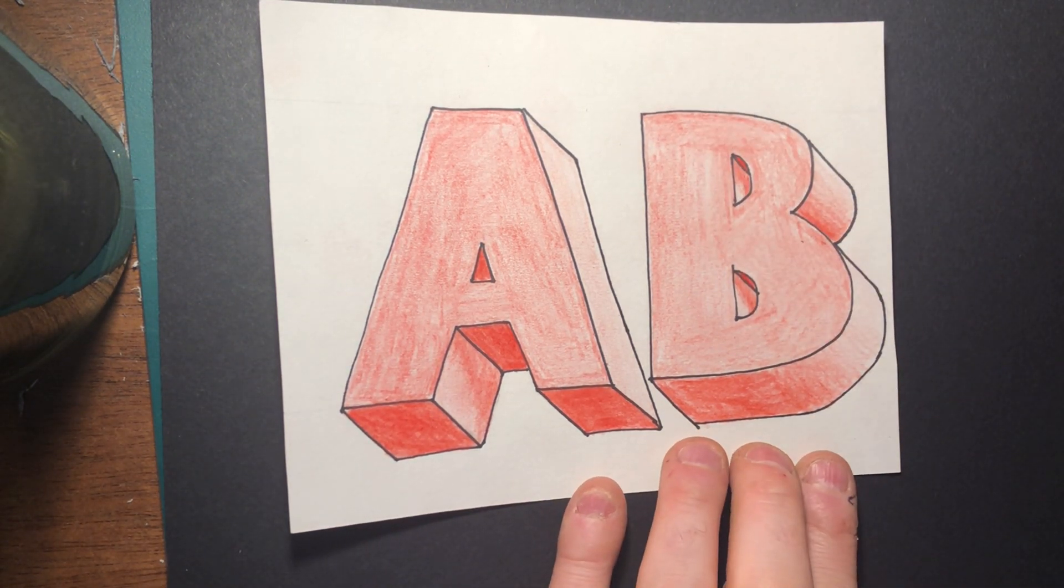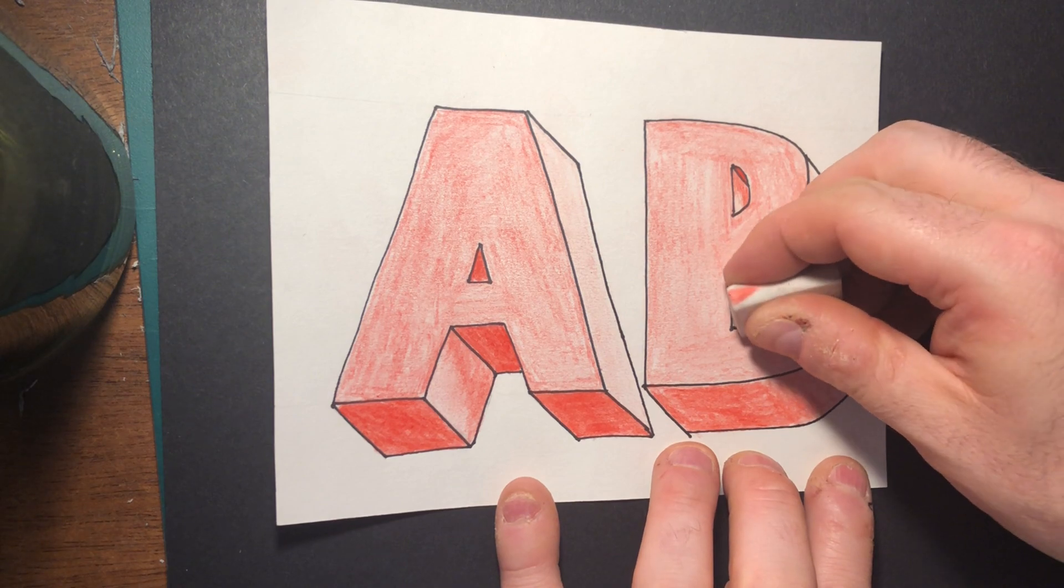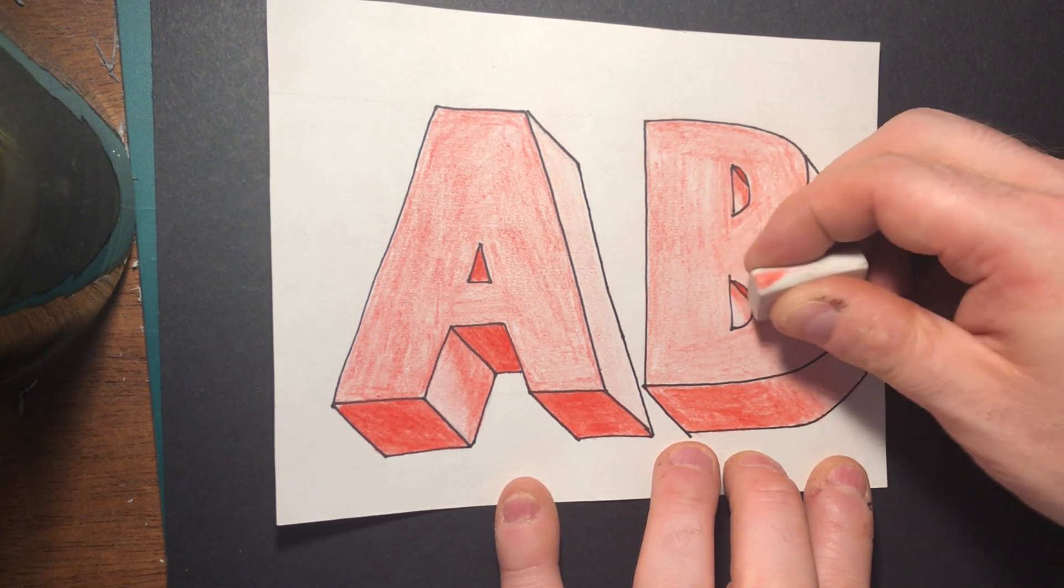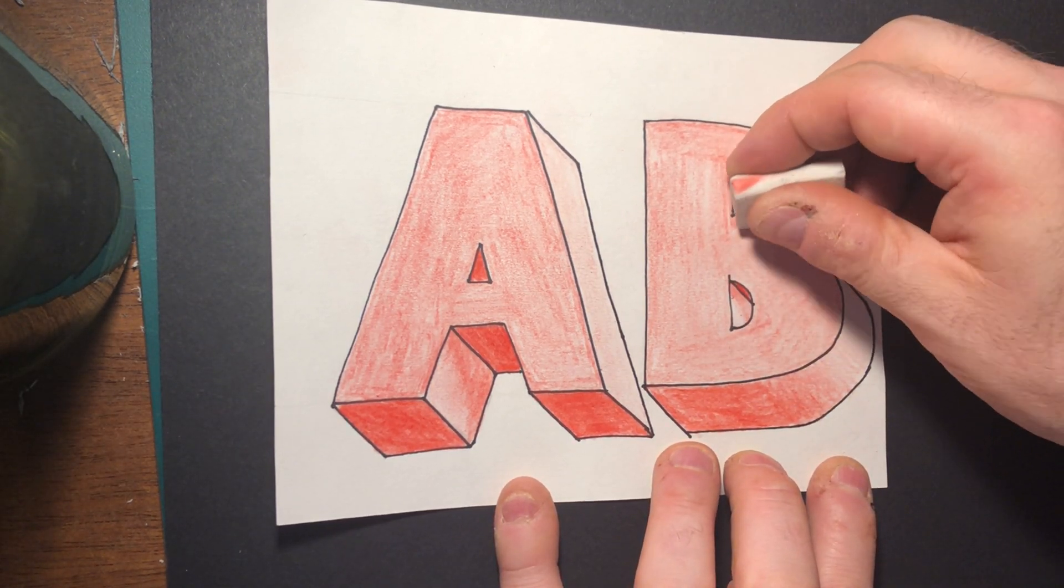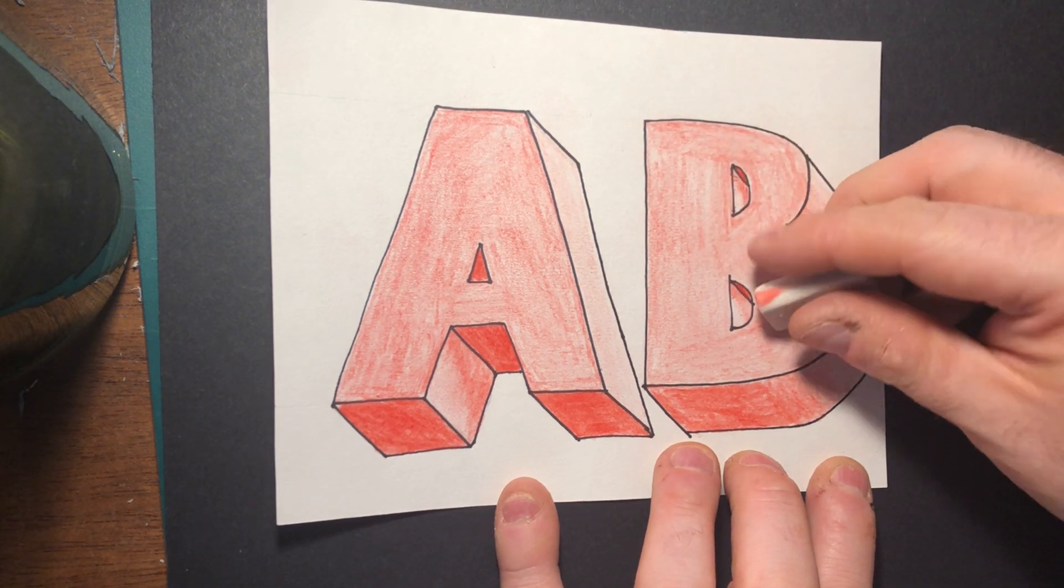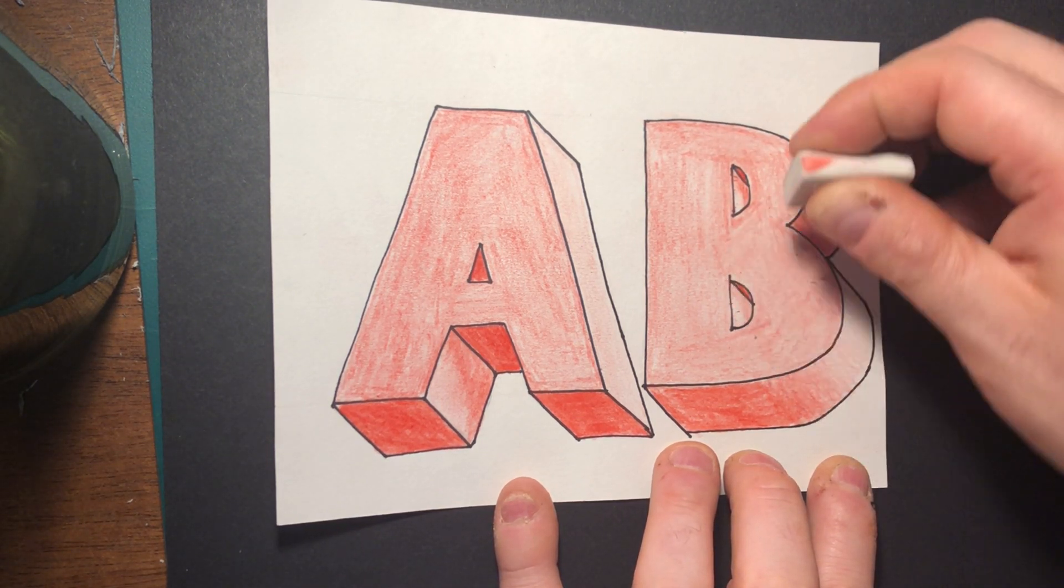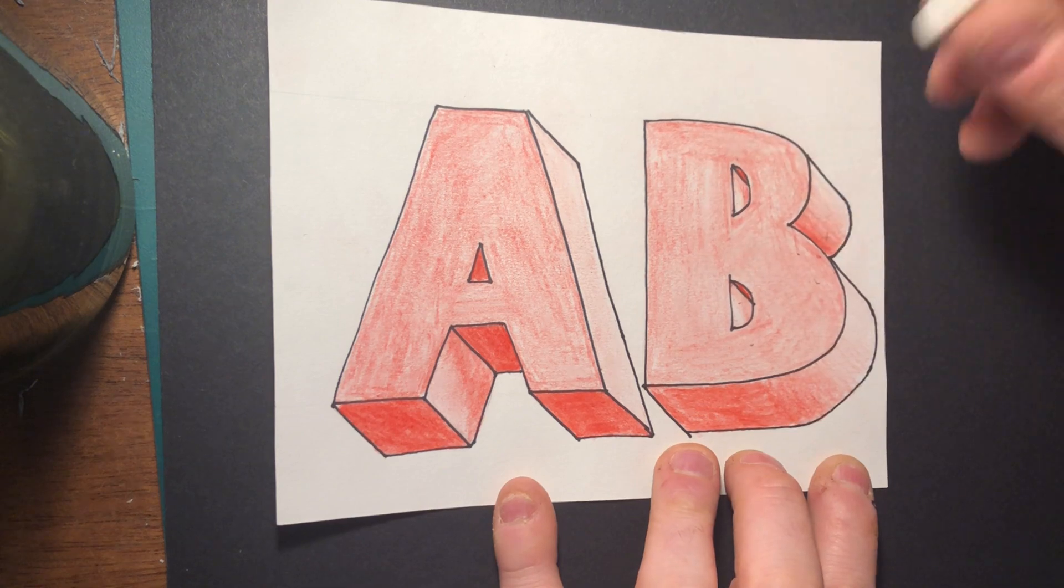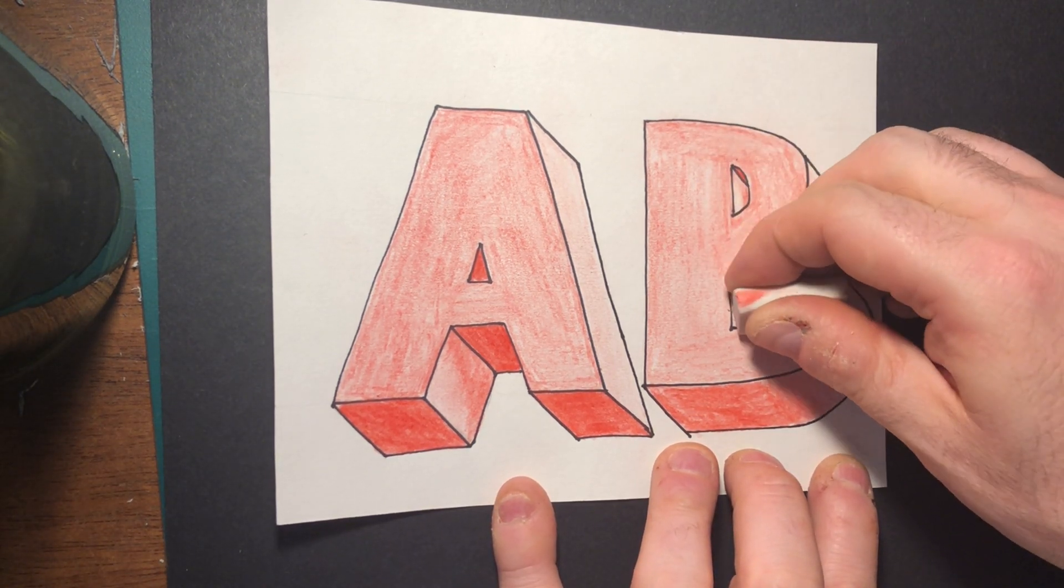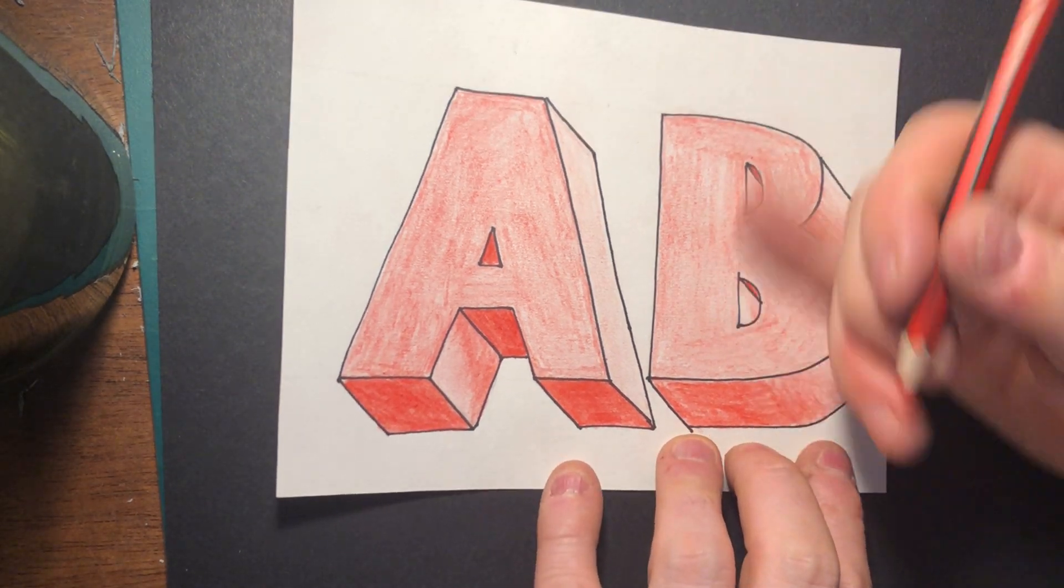The nice thing about these pencils, actually school pencils that I've got, is you can actually rub it back with them, so you can rub bits out if you want to, which is really cool. Because I want to try and get this edge here right on that edge. I want that to be as light as possible.